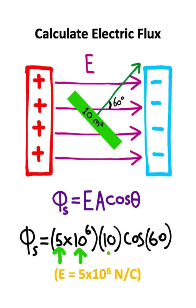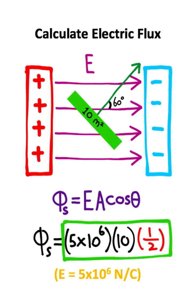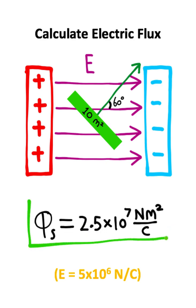So you have 5 times 10 to the 6th times 10 times the cosine of 60. The cosine of 60 is 1 half, so if you multiply out all these numbers you should get a value of 2.5 times 10 to the 7 newtons times meters squared per coulomb.